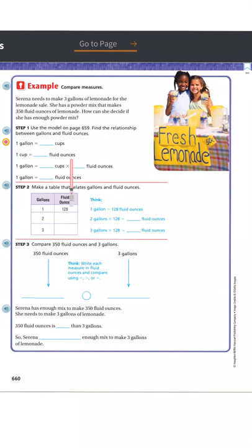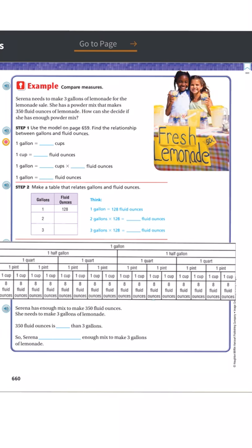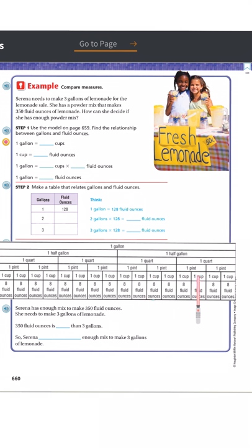Step one: use the model on page 659 to find the relationship between gallons and fluid ounces. Looking at the conversion chart — one gallon is the same as how many cups? Going all the way down to the cups: 1, 2, 3, 4, 5, 6, 7, 8, 9, 10, 11, 12, 13, 14, 15, 16. There are 16 cups in a gallon.